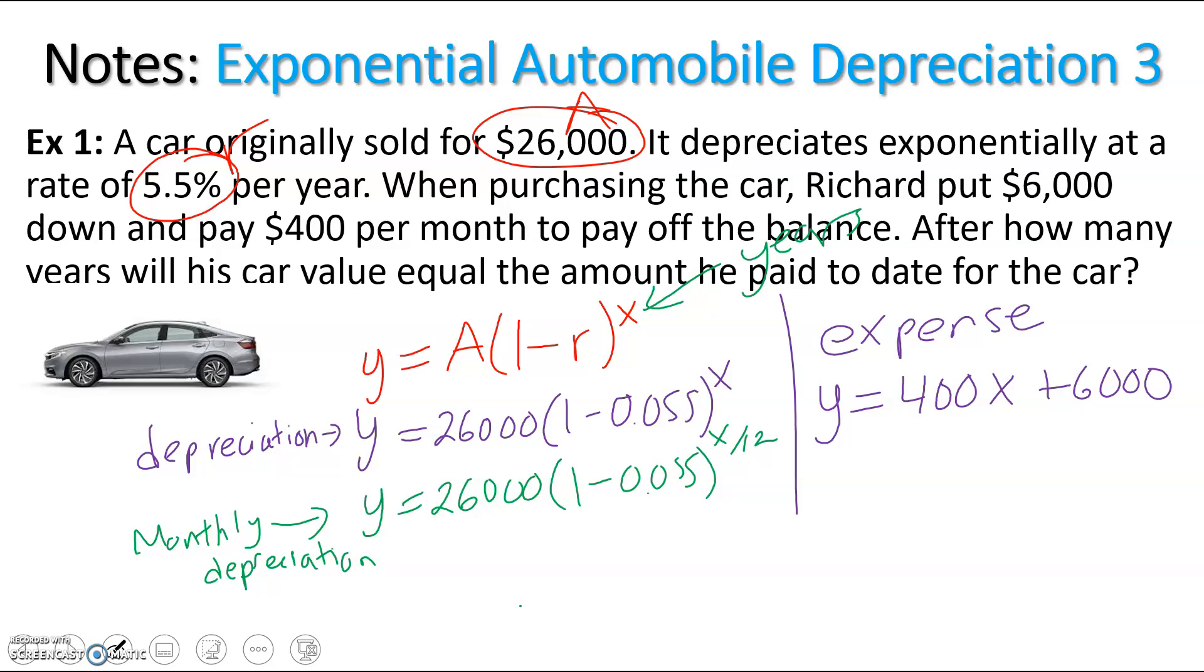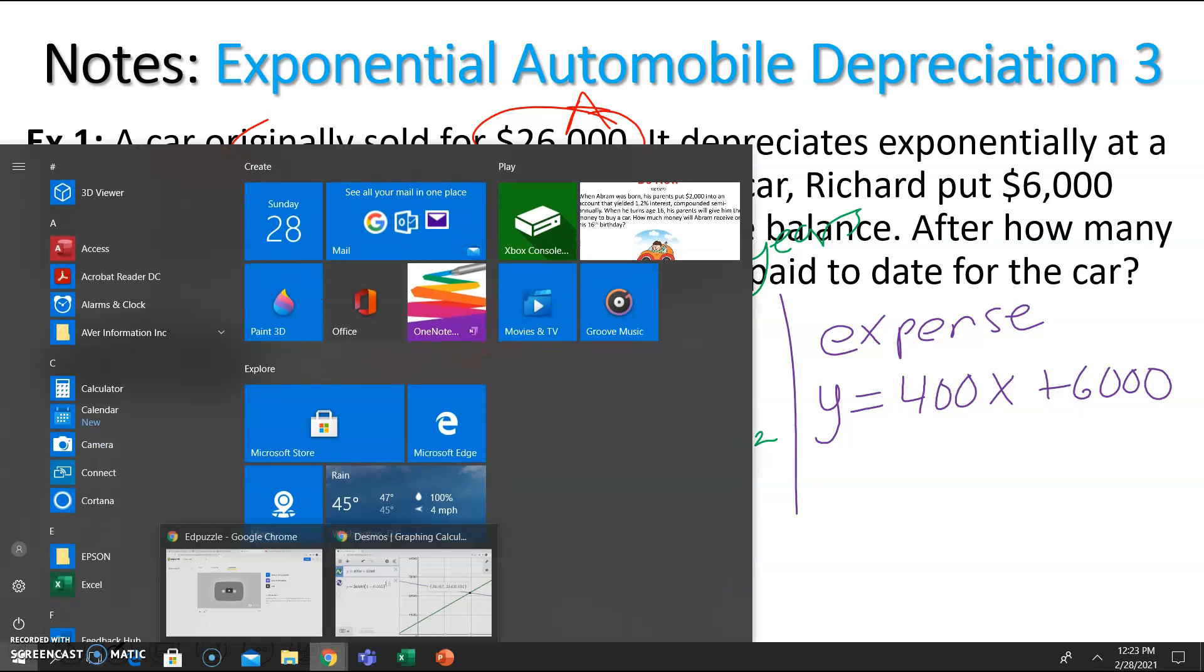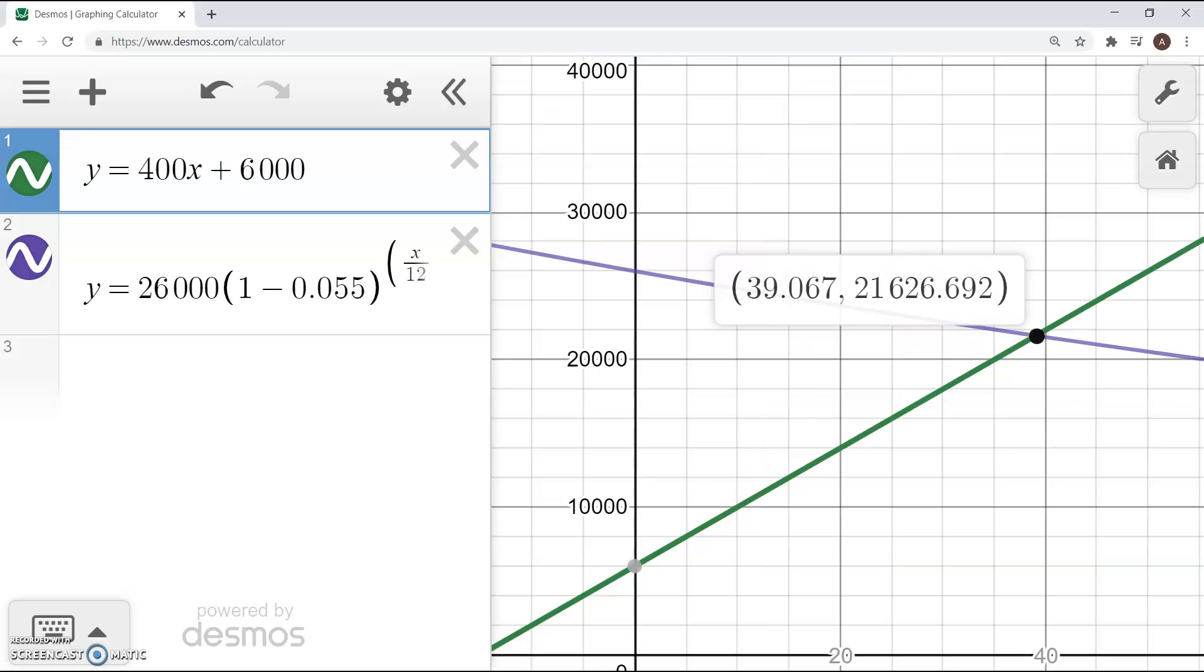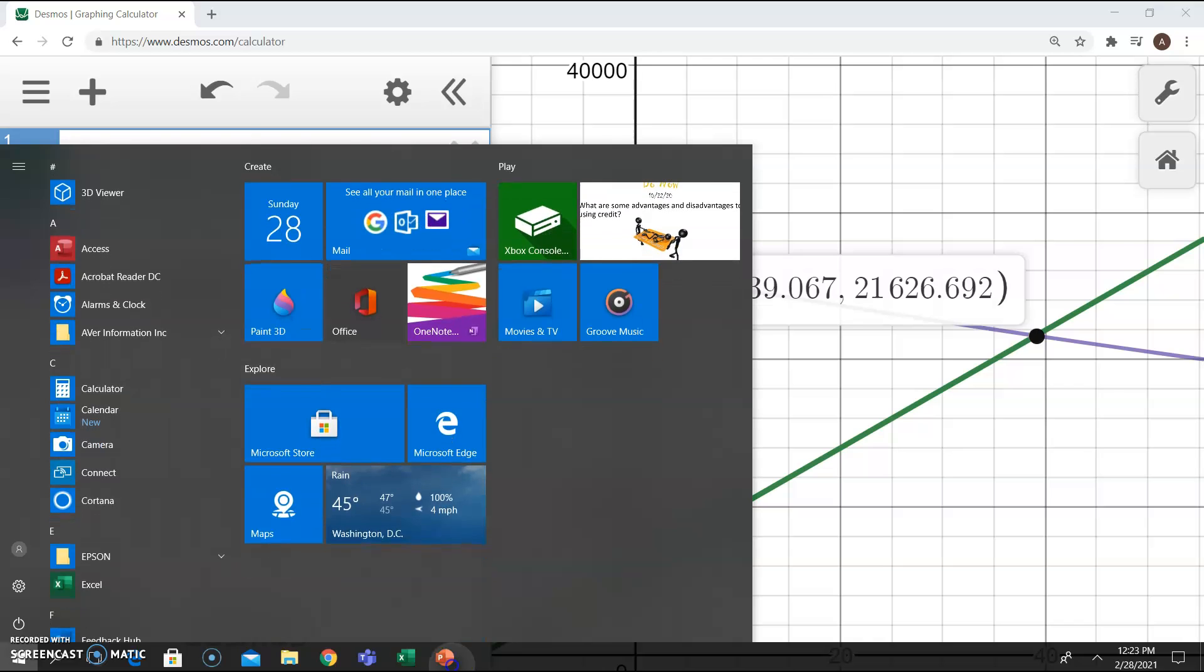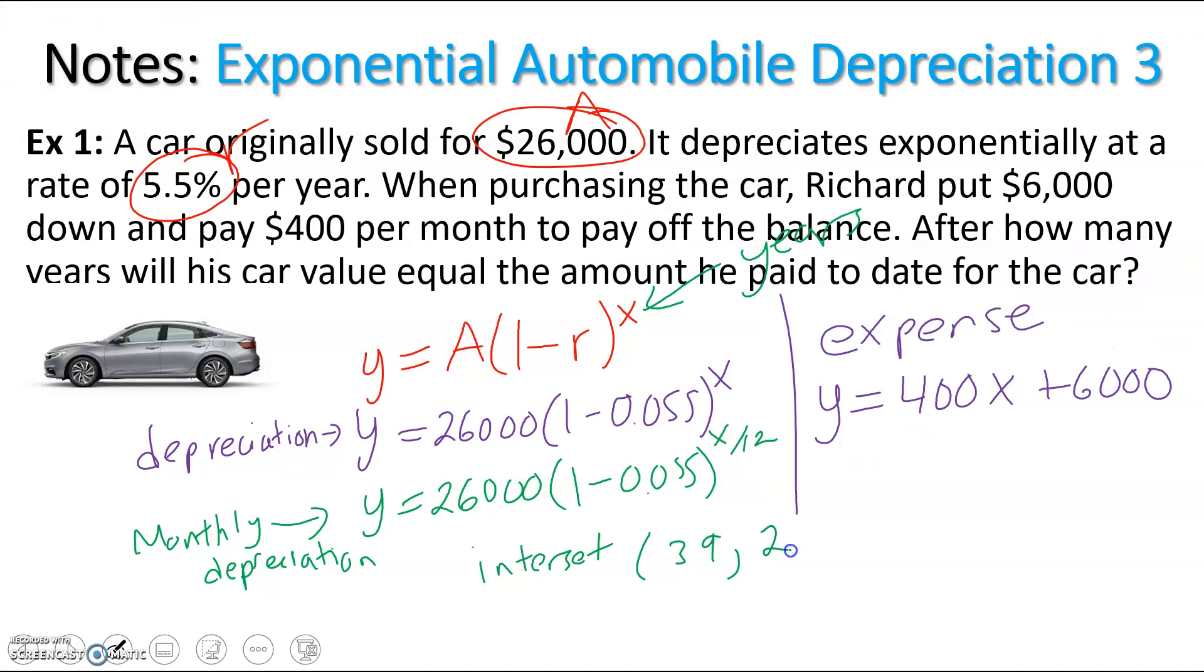So we have our coordinates for that intersection. They intersect at about 39, 21,626.69 cents.